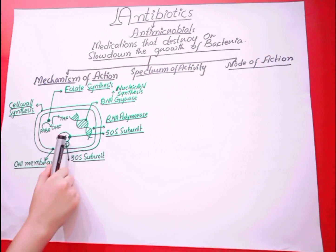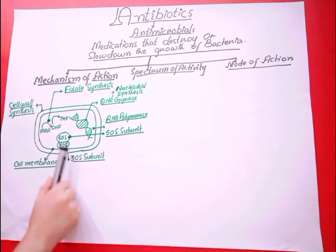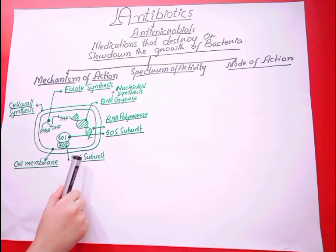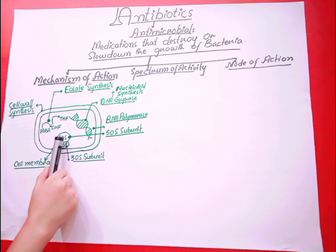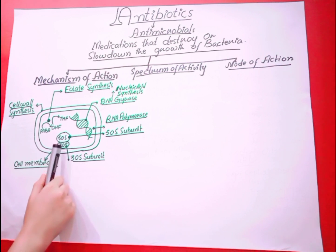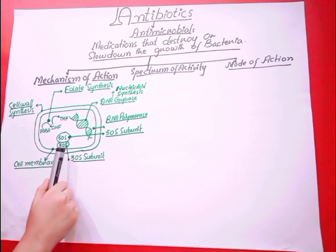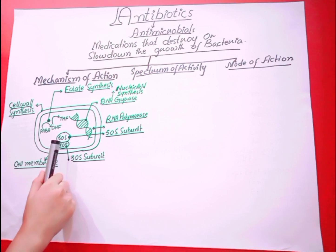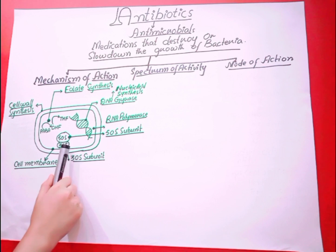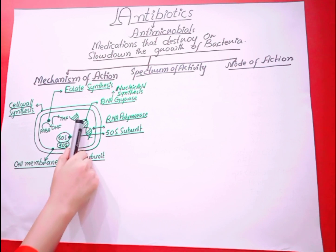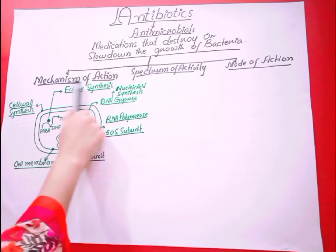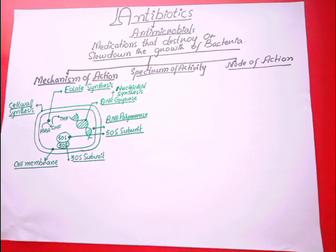The ribosome has 50S and 30S subunits. In bacterial cells, the ribosome structure has 50S and 30S subunits, while in the human body we have 40S and 60S subunits. Also shown are the DNA structure and the folate synthesis pathway.